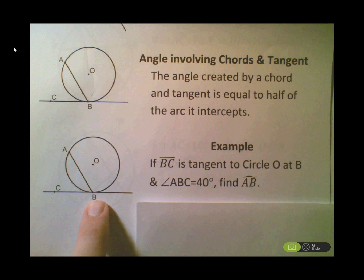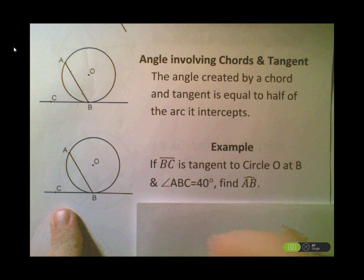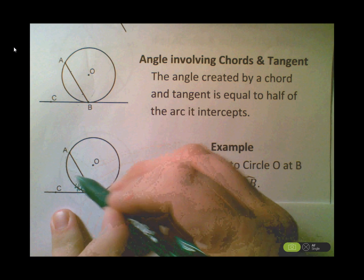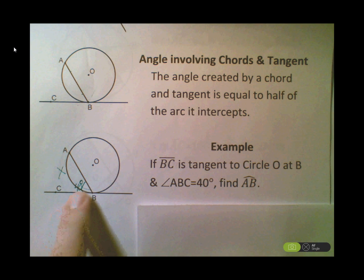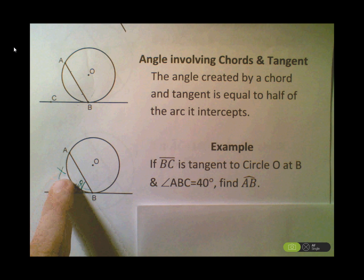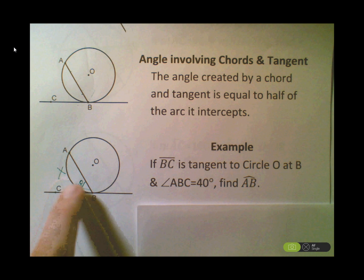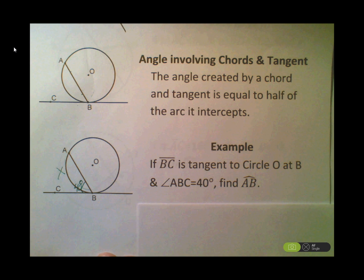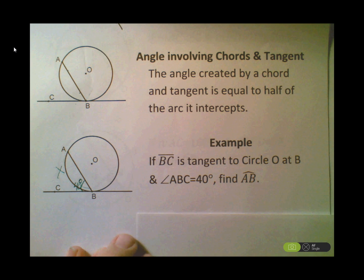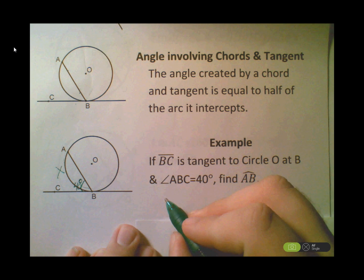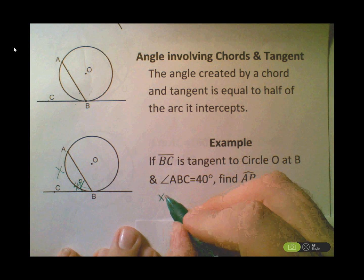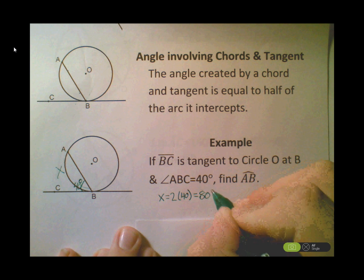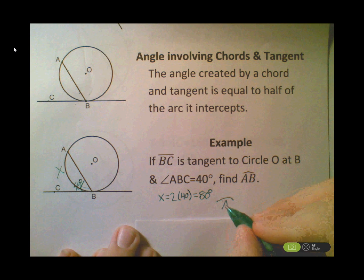Example: BC is tangent to circle O at B, and angle ABC is 40 degrees. Find arc AB. The arc is going to be twice as big as the angle, because the angle is half the arc. So x = 2 × 40 degrees = 80 degrees. Arc AB equals 80 degrees.